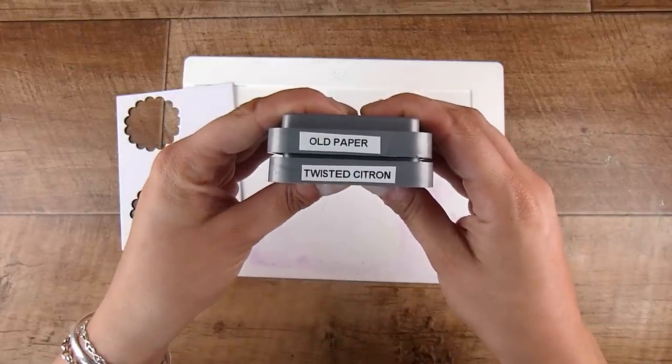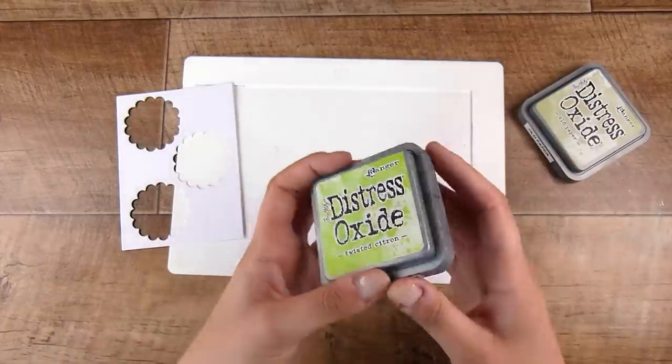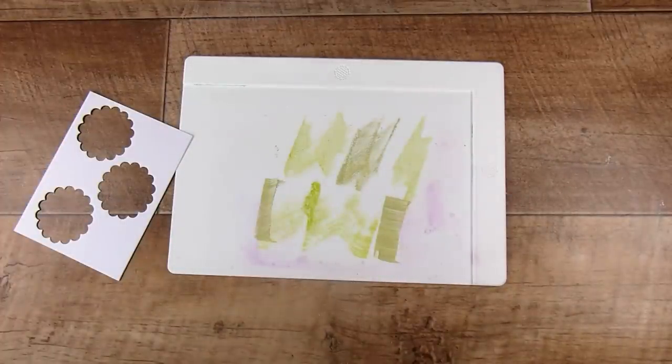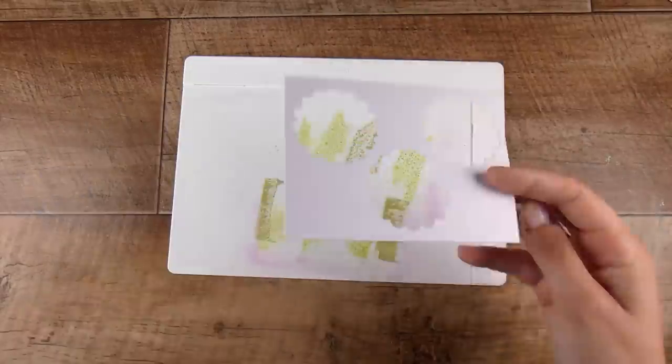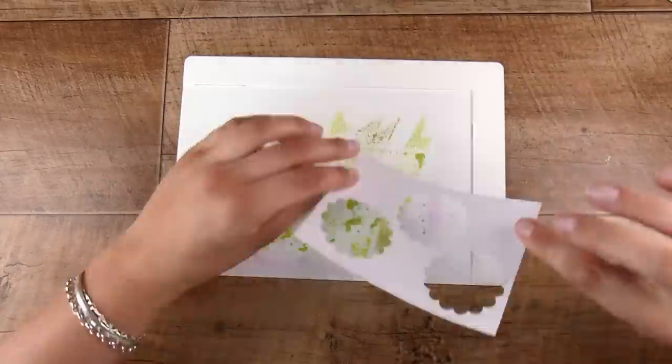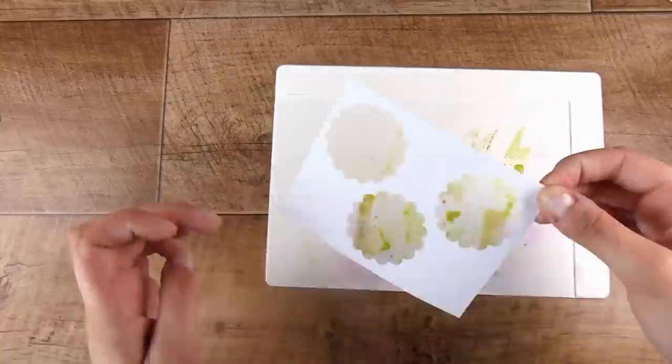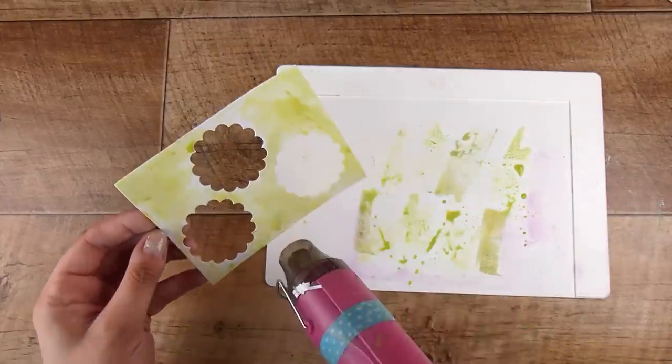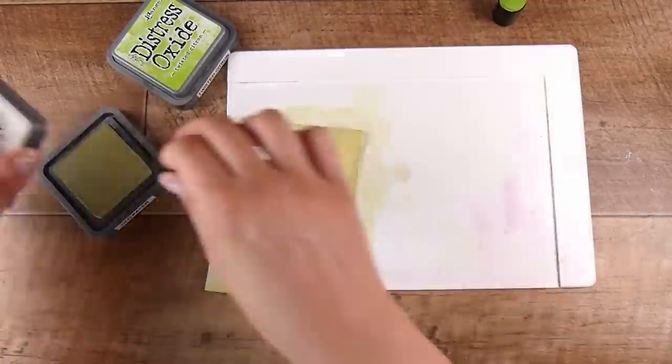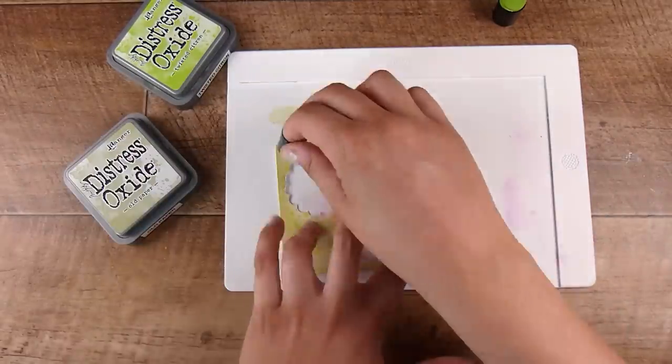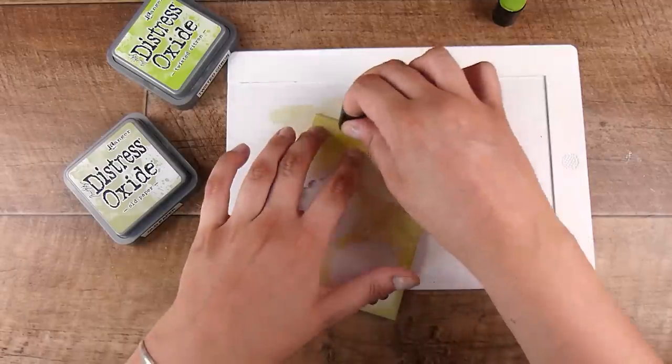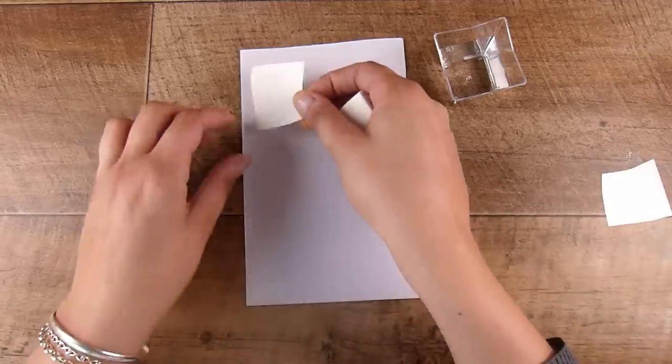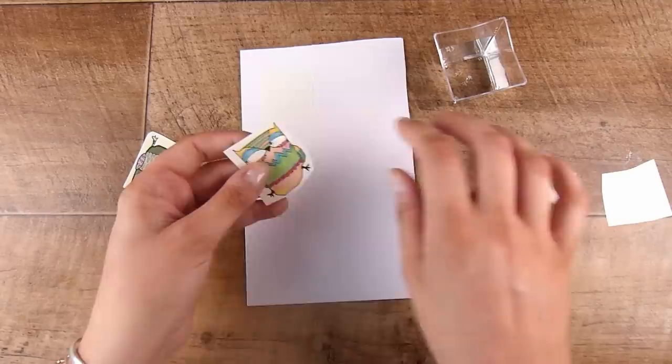First of all we're going to create a background. I'm using Old Paper and Twisted Citron onto a Waffle Flower stencil mat. I have found this to be a really handy sized mat. I really love this for ink blending because the silicone grips everything and makes it much easier. I like the size, it's nice and small to store, and I like the cleanup.